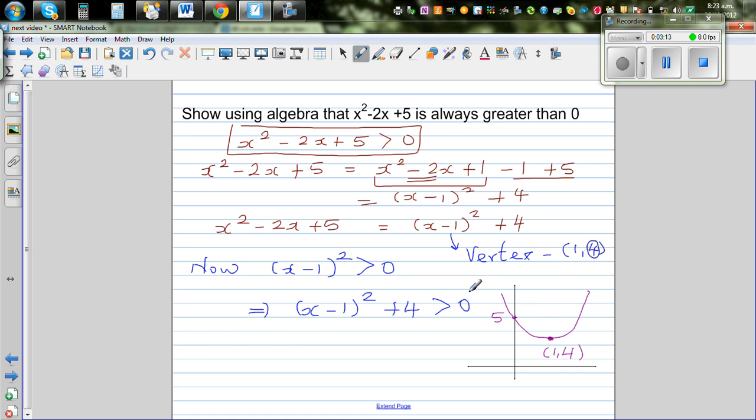And that's why, or you can also say, if you want to be more specific, x minus 1 the whole squared plus 4, you can say is always greater than equal to 4. It cannot be less than 4. It's either equal to 4 or greater than 4.